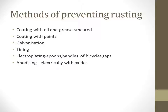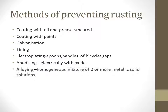Anodizing is a process where a substance gets electrically coated with its own oxides. Alloying is a homogeneous mixture of two or more metallic solid solutions. Remember the definition: it is a mixture of two or more metal solid solutions. An example of an alloy is stainless steel, which is a very important alloy.